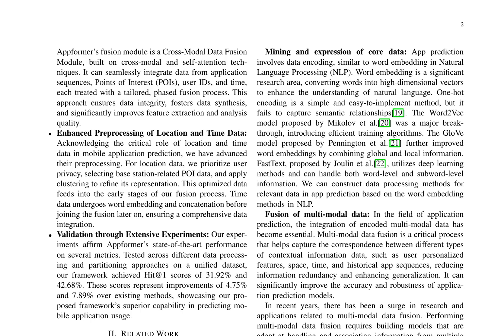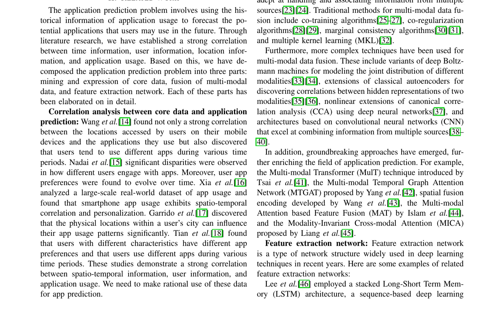The problem is decomposed into three parts: mining and expression of core data, fusion of multimodal data, and feature extraction network. Correlation analysis between core data and application prediction reveals strong correlations between location, time, and user information. Mining and expression of core data involve data encoding, similar to word embedding in natural language processing (NLP).